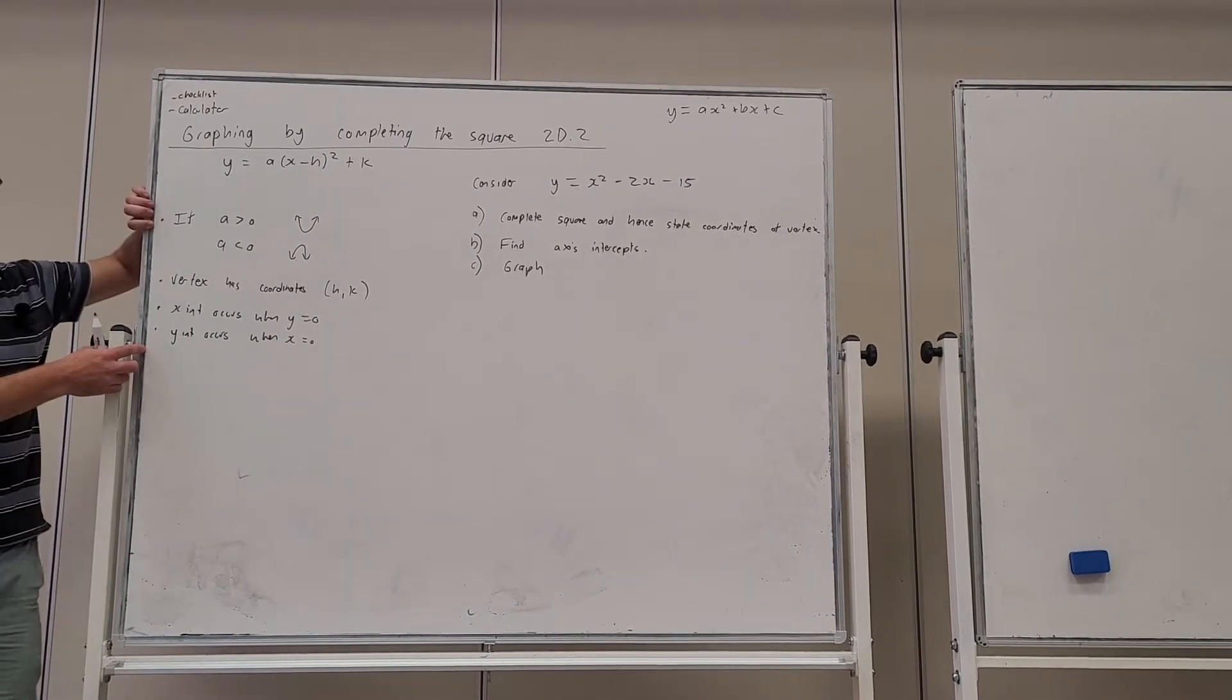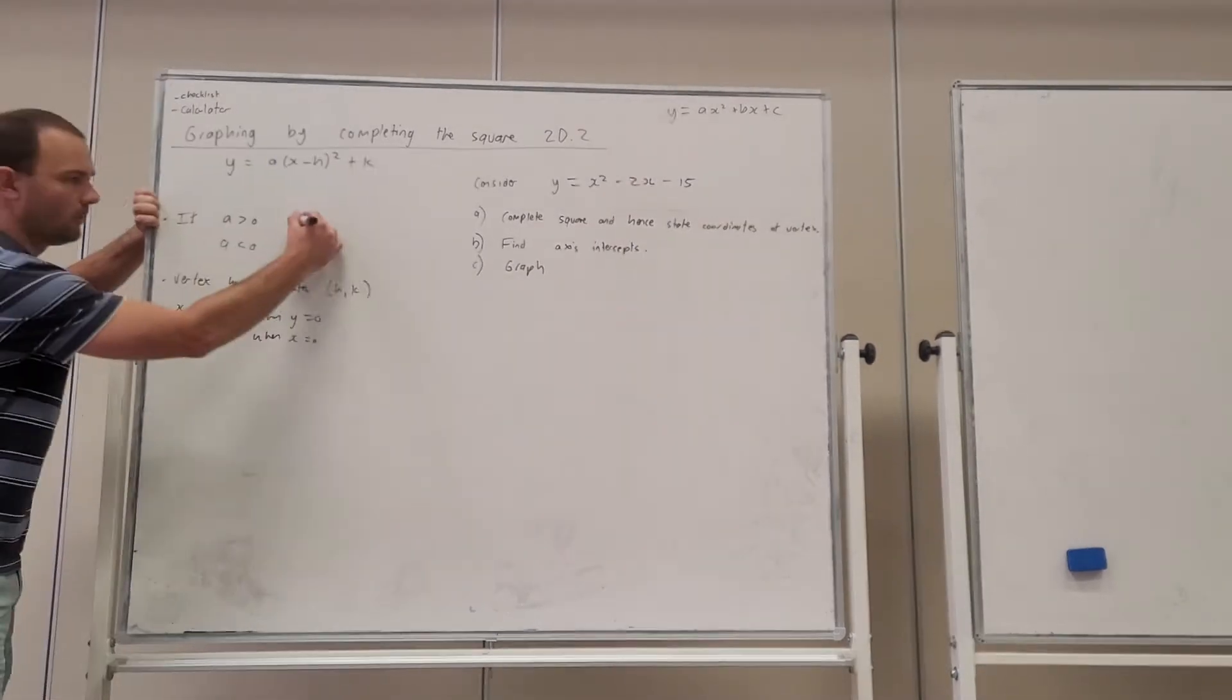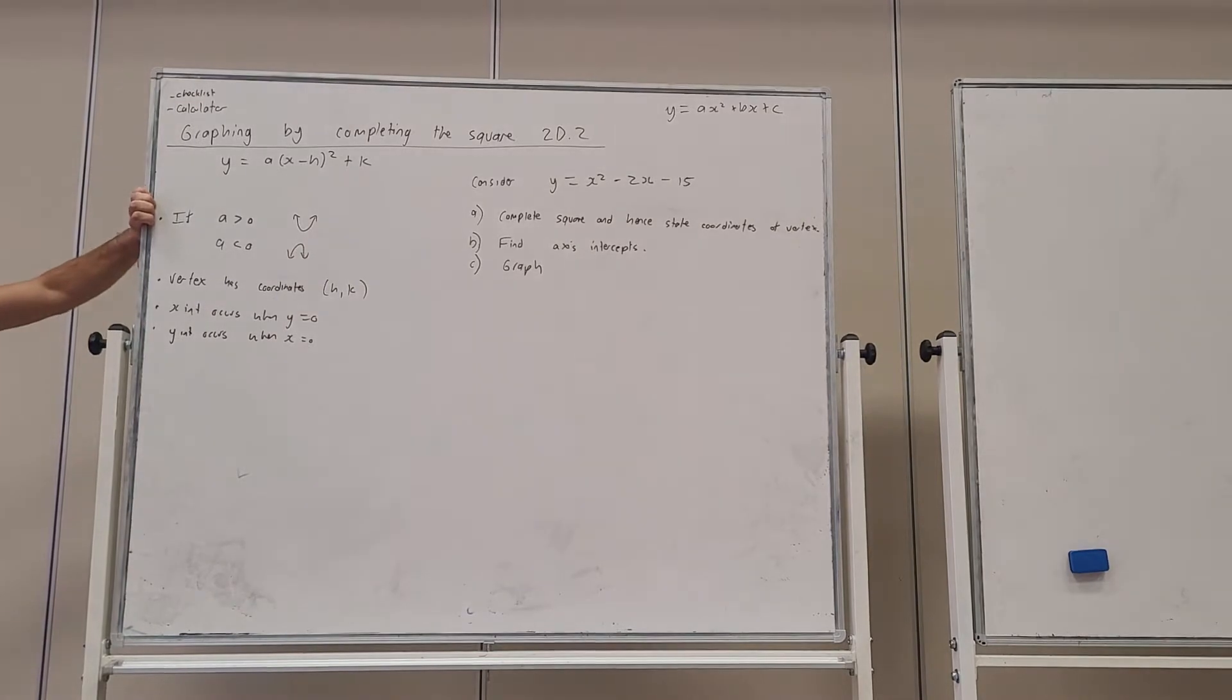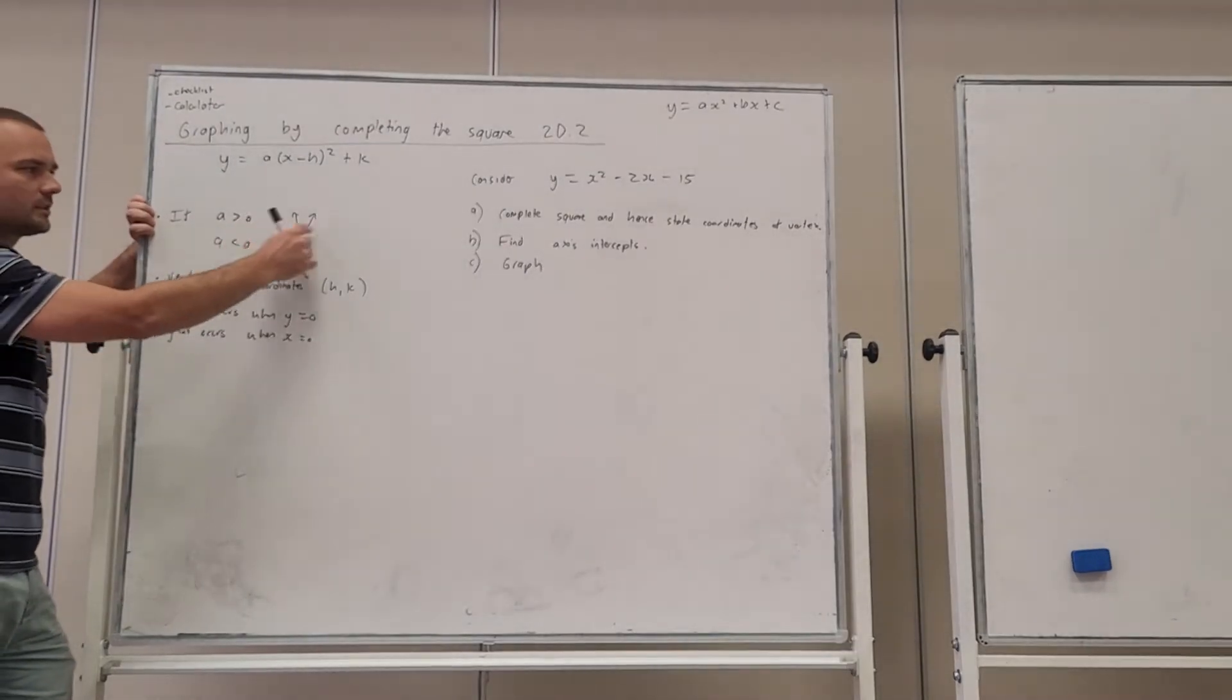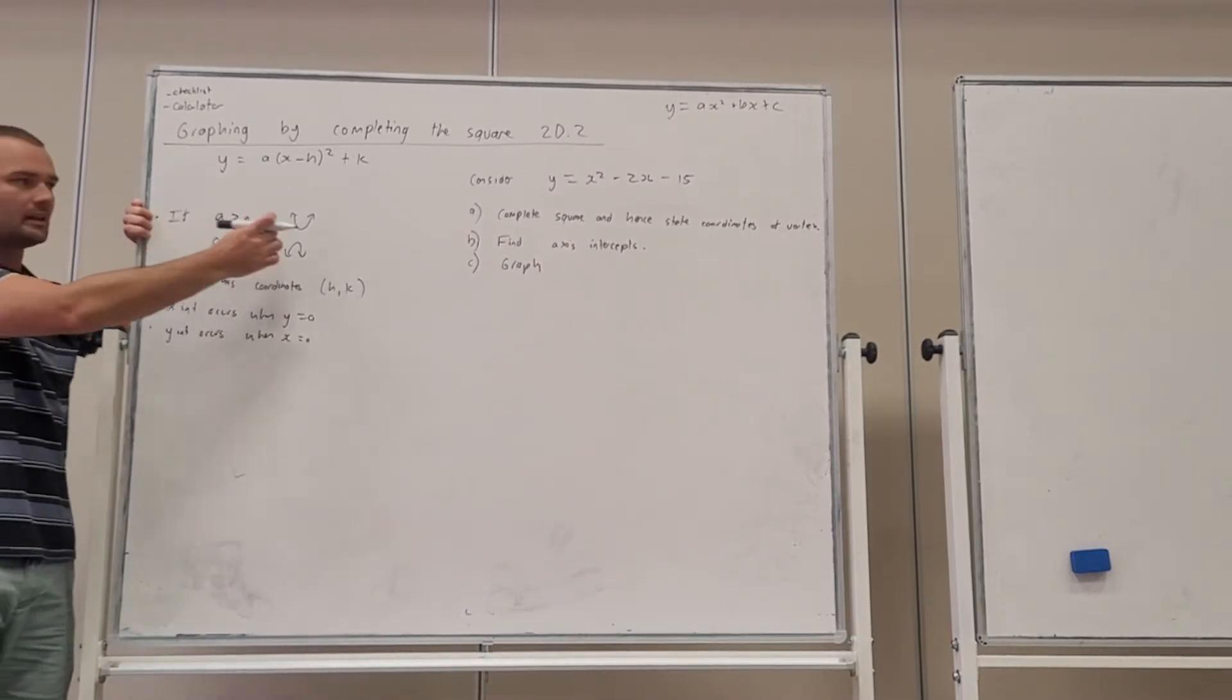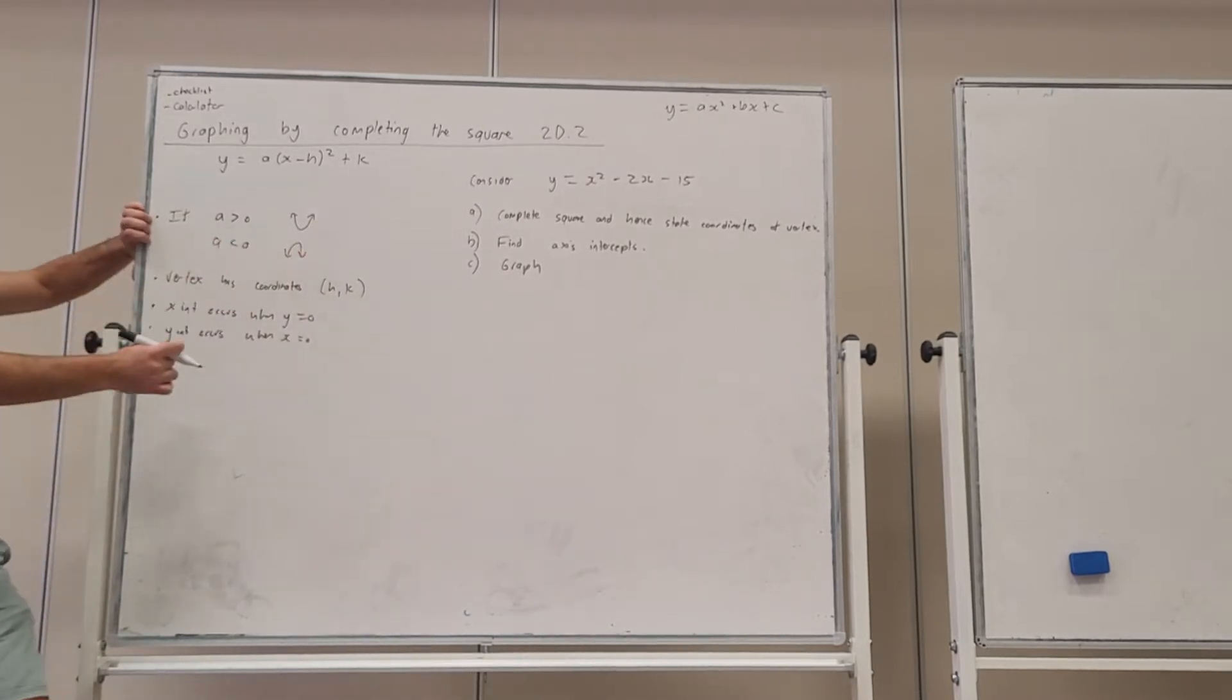So I've just got these four dot points to begin with. Firstly, a quadratic has either this shape opening upwards or it has this shape opening downwards. And we call that shape a parabola. So if a is greater than zero, it's going to open upwards. What that means is if a is positive, it's going to be a happy face. If a is negative, it's going to be a sad face. It's a good way to remember it.